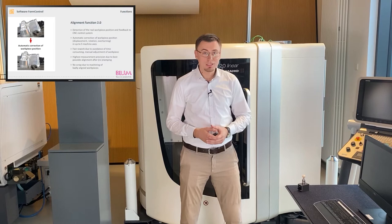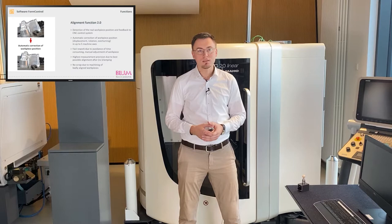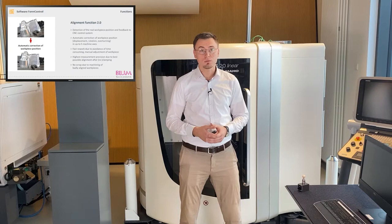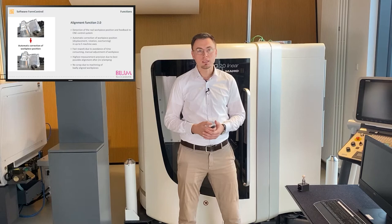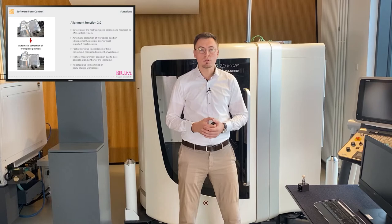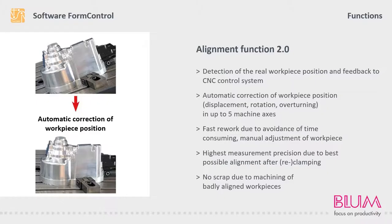Reclamping workpieces in precisely the same position so that they are perfectly aligned for further processing or reworking is a difficult and time-consuming endeavor, even for experienced machine operators. The components are often very heavy and require lifting equipment to be moved. Another challenge is presented by raw parts with small dimensions, where it must be ensured that a uniform amount of material can be removed from all surfaces being processed. Thanks to the alignment function 2.0, these difficulties are now a thing of the past. The intelligent algorithms calculate and correct the workpiece position automatically in up to 5 machine axes, although individual axes can be disabled for an application-specific alignment, so that the workpiece coordinate system exactly matches the CAD coordinate system.